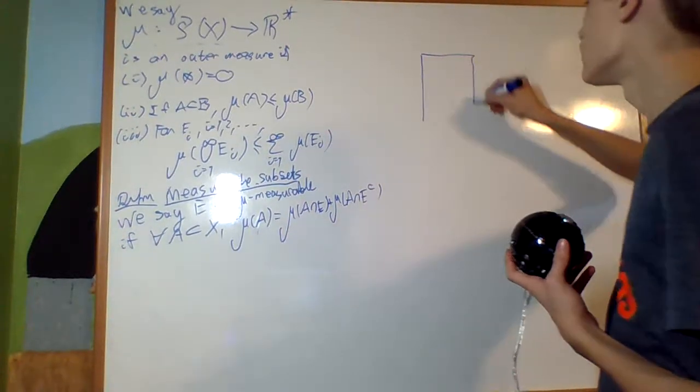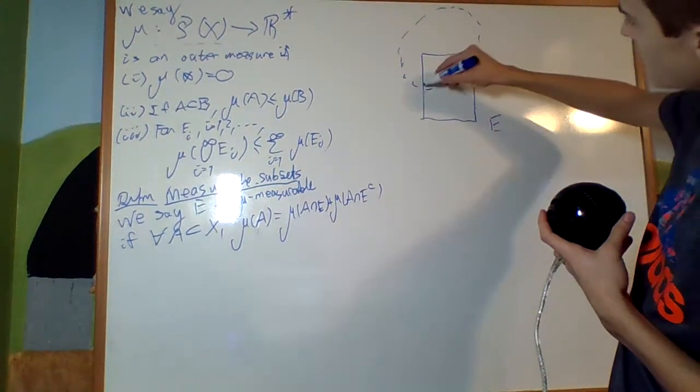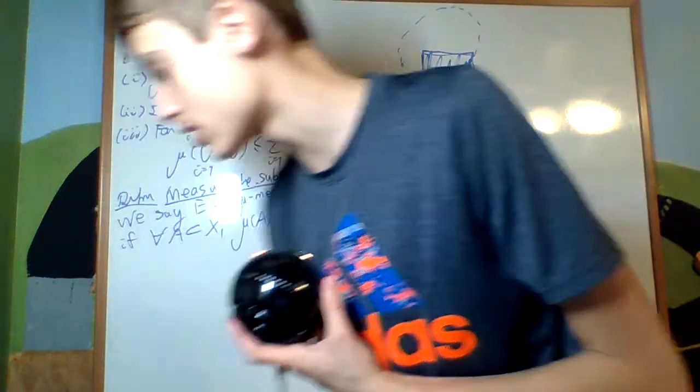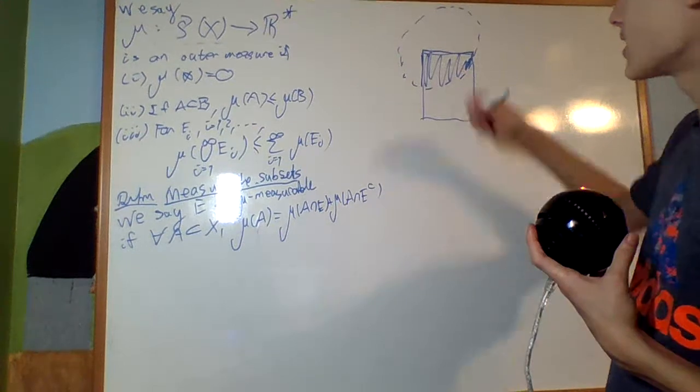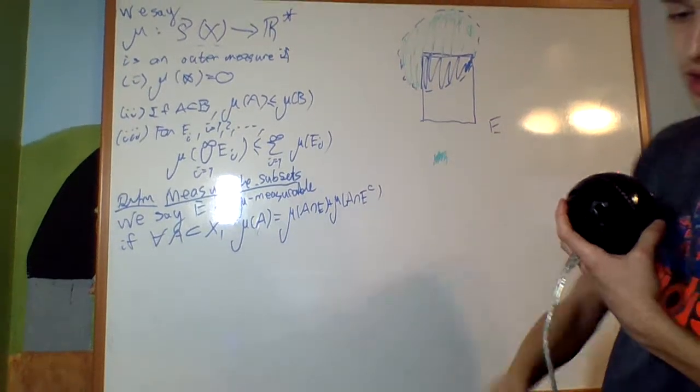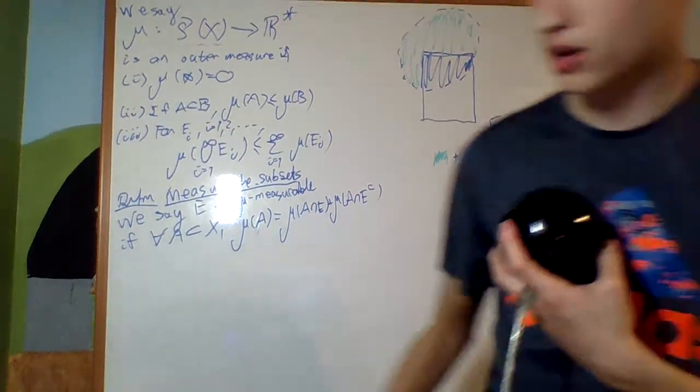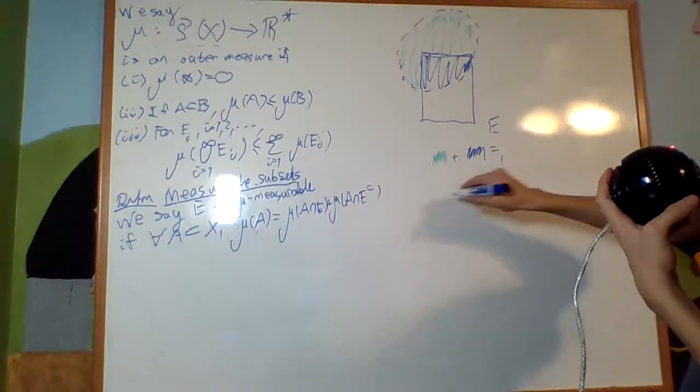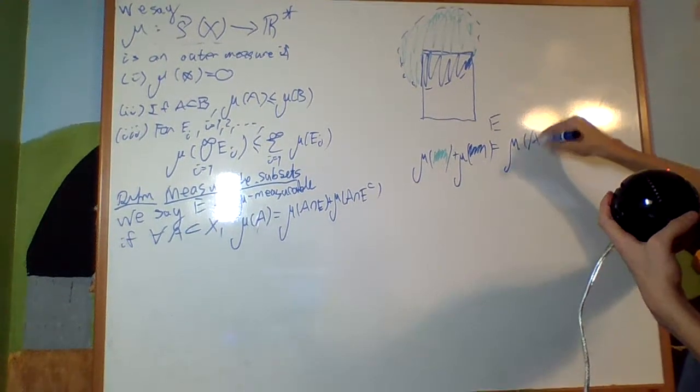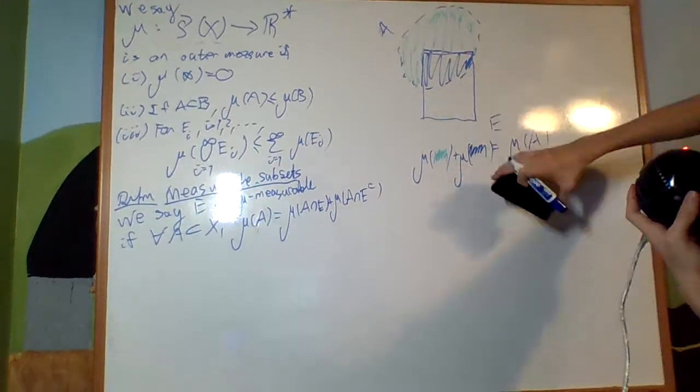Take, for example, this be the set E. And for any A I pick, if I look at the subset of A that is inside versus the subset of A that is outside, the green area plus the blue area should be equal to the entire area. The measure of the green area plus the measure of the blue area has to be equal to the measure of A.